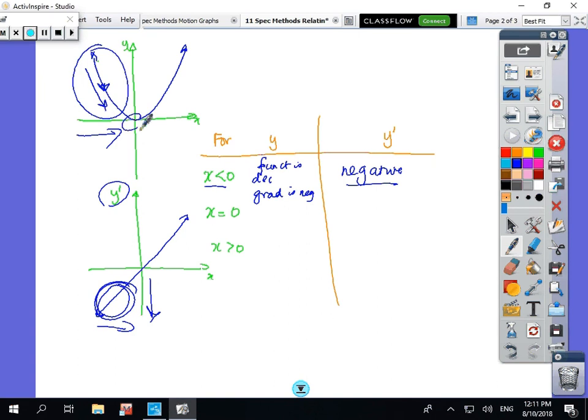At x equals zero, the function is stationary - it's a stationary point, or what we call a turning point, and y dash is zero. When y dash equals zero, it must be a turning point.